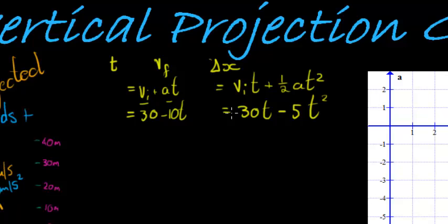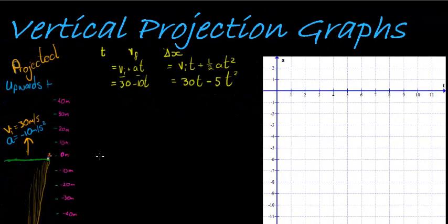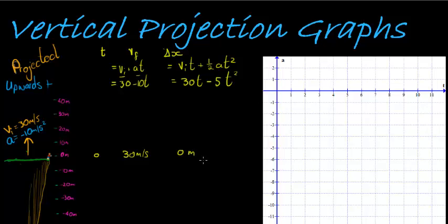Let's go and see where we are at each time. After zero seconds, when t is zero, negative 10 times zero is simply zero, so my future velocity is still 30 meters per second - it's upward motion, so it's positive. For displacement: 30 times zero is zero, and 5 times zero squared is also zero, so displacement is zero meters. This makes sense because no time has elapsed - the object hasn't moved yet, but it already has an initial instantaneous velocity.